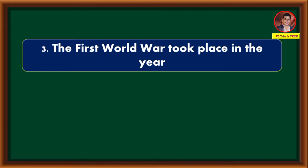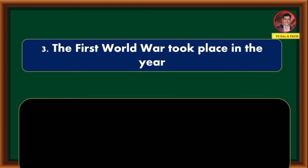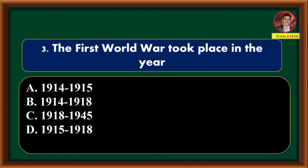The First World War took place in the year — 1914 to 1950; 1914 to 1918; 1918 to 1945; 1915 to 1918. Correct answer is option B: 1914 to 1918.